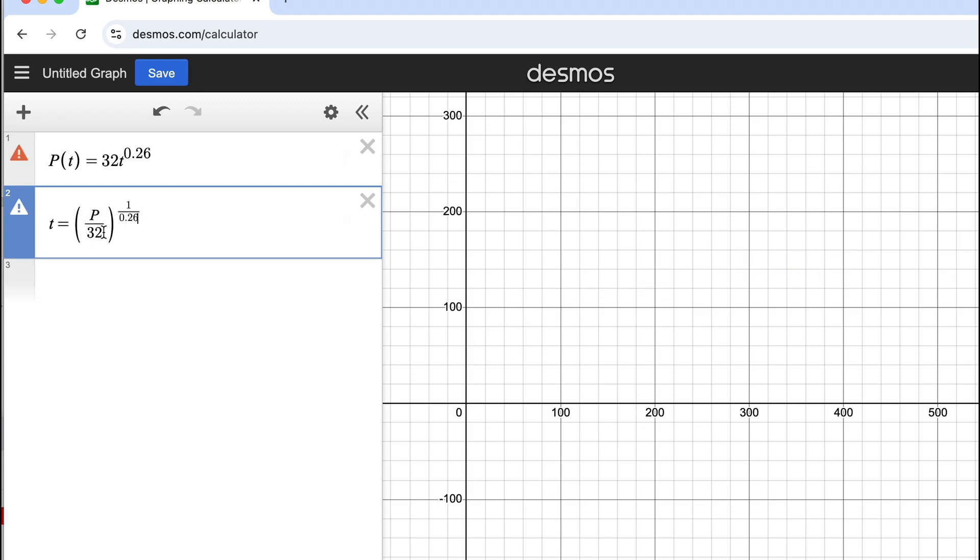Now Desmos does not totally understand here what I want to do. I'm just going to put an x there, and I think I'll just put a y so that it doesn't confuse the program. I don't want to use t twice. So there we go. There's a graph of what the inverse looks like.